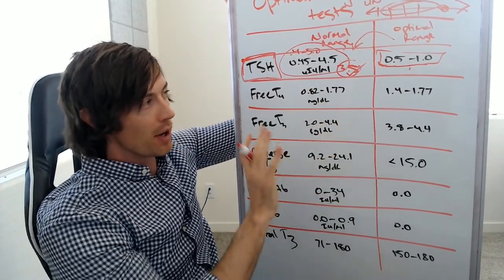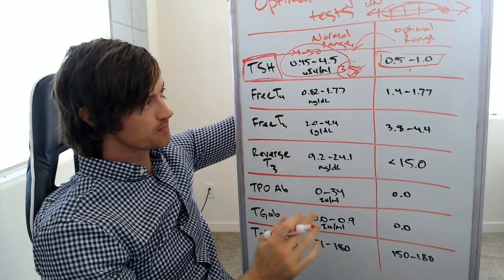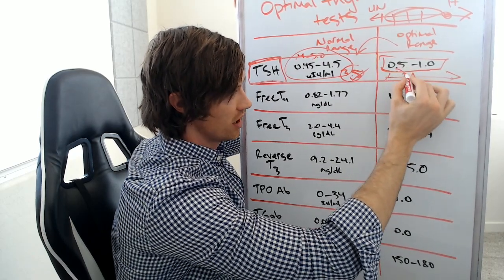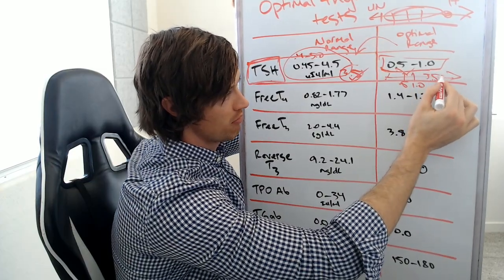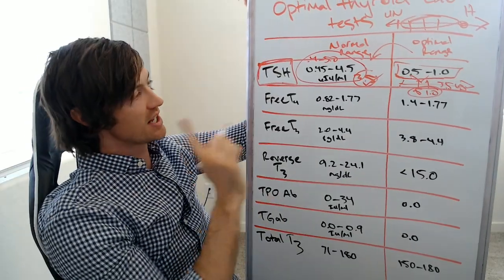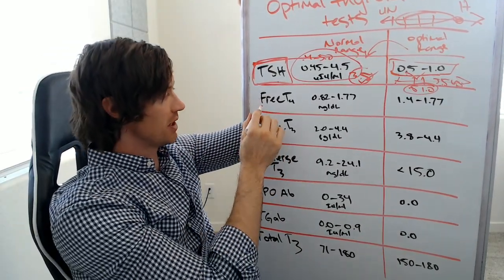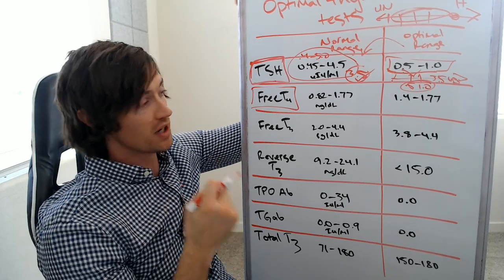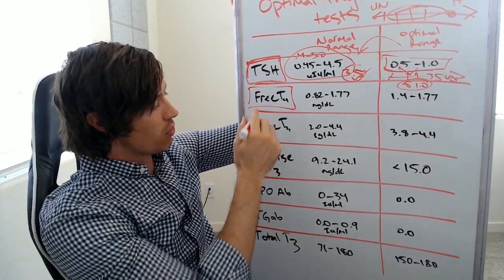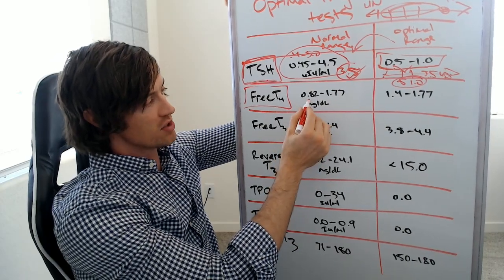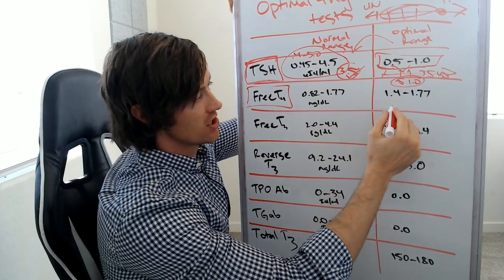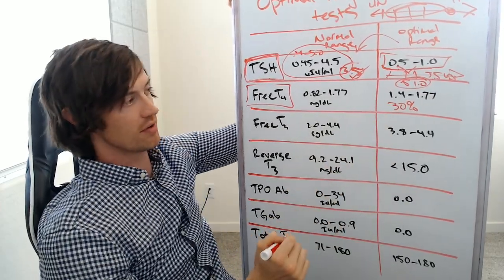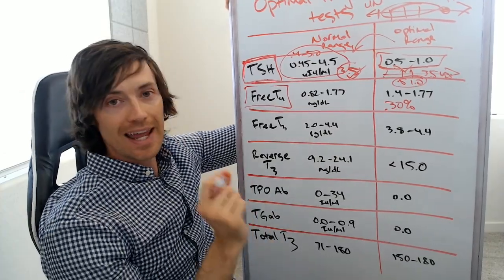So that's test number one. In addition to TSH, you also need to be getting the free T4. Free T4 basically tells you how much T4, which is a type of thyroid hormone, is available in the blood. It's not as important as the others, but you should get it. The broad range is 0.82 to 1.77 in my example, and what I'm recommending is to try and get in the top 30% of this reference range. So I've tightened this range up to 1.4 to 1.77 — that's where you want your free T4 to be in the optimal state.